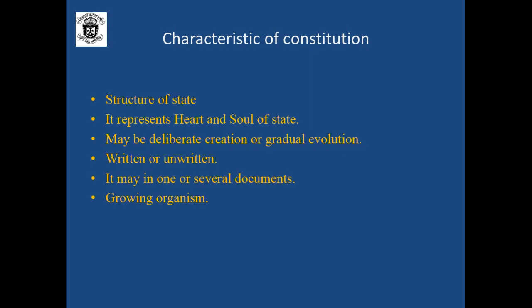The other characteristic of the constitution is that it may be in one document or in several documents. In one document form, for example, India's constitution is in book form — a single document form. Anybody can go and purchase the book and study it. But in case of several documents, we take the example of England, where the constitution is not in one document form but is spread across several documents. Some part of the constitution rests with tradition and convention. So England's constitution is not in one document form.